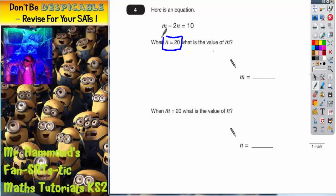The first thing we're going to do is write this equation down so we've got a bit more space to look at it. So we've got m take away 2 times by n. Remember there's an invisible times sign between the 2 and the n. 2n means 2 times by n, and that is equal to 10.